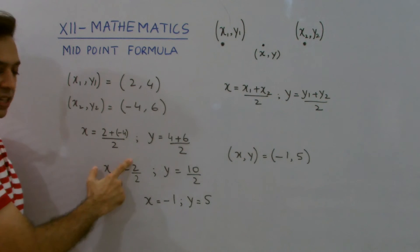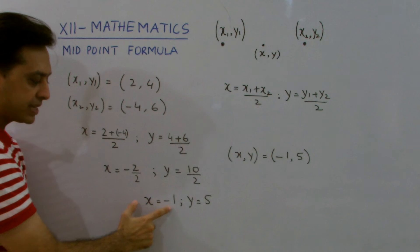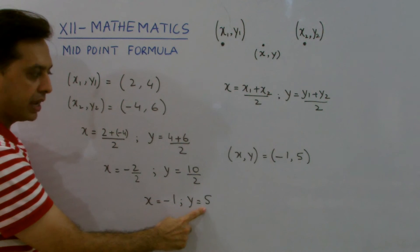Through simplification, I get -2/2 and 10/2. Finally, resulting in x = -1 and y = 5.